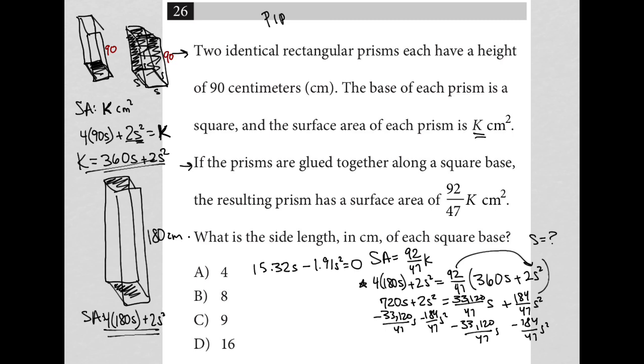And now I can factor this out. There's no obvious GCF in terms of the coefficients. So I'm going to just say I have s. And this becomes 15.32 minus 1.91s equals 0. So obviously, s could equal 0, which is not possible because we're dealing with side lengths of squares. So even though mathematically that's true, in reality, that's not true.